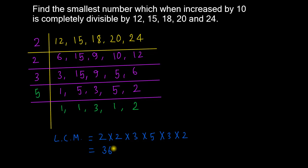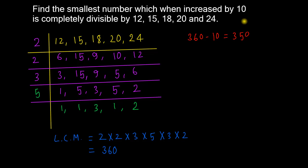So 360 is the answer. The numbers 12, 15, 18, 20, and 24 — 360 is divisible by all of them. Now 360 minus 10 is 350. Looking at 12, 15, 18, 20, 24 — they all divide 360. So our smallest such number comes to 350.